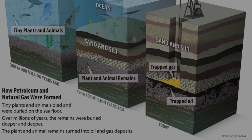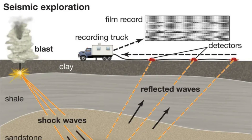The search for natural gas begins with geologists who study the structure and processes of the Earth. They locate the types of geologic formations that are likely to contain natural gas deposits. Geologists often use seismic surveys on land and in the ocean to find the right places to drill natural gas and oil wells. Seismic surveys create and measure seismic waves in the Earth to get information on the geology of rock formations.